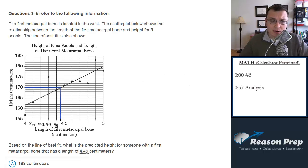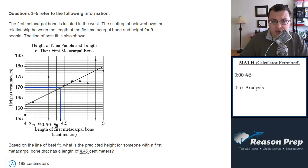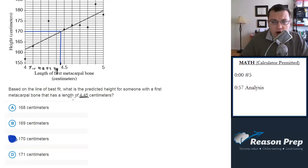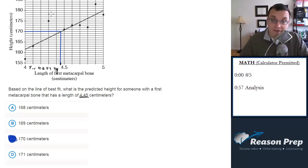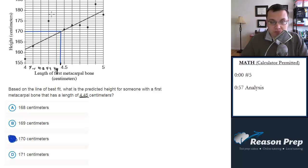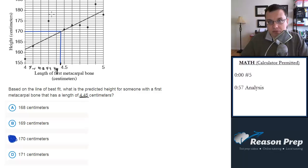This is a question on line of best fit, so you need to know how to work with line of best fit. You're working with some real life quantities, but in the end, if you know how to deal with the line of best fit and you know how to read the graph to get a y value for an x value — or in this case, a height value for a length value — you'll have no problem with this one. This is pretty reasonable and shouldn't be much trouble for students who've done their work on lines, reading graphs, and lines of best fit.